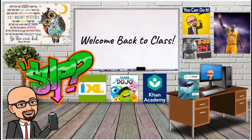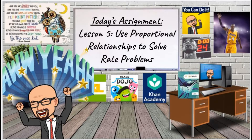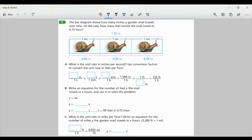Welcome back, everybody. This is Mr. Paredes, and this is Lesson 5: Use Proportional Relationships to Solve Rate Problems. This is pages 35 through 42 of your Into Math workbook. Let's go ahead and get into it. Let's look at page 35, Task 1.